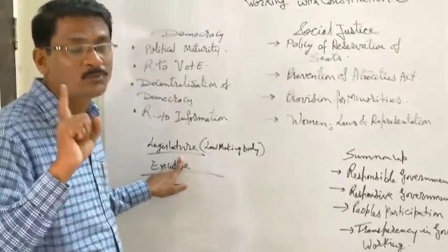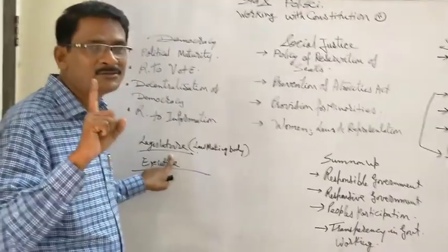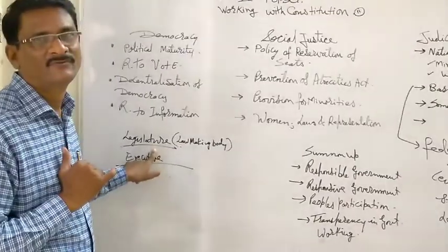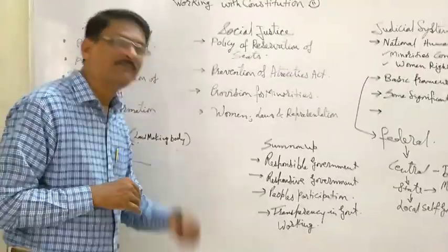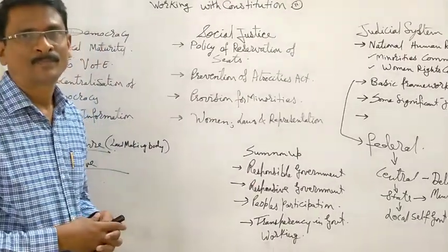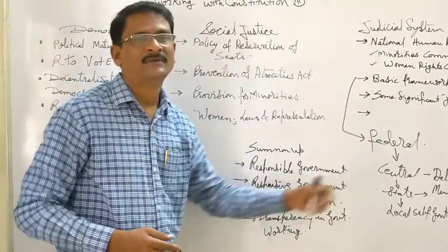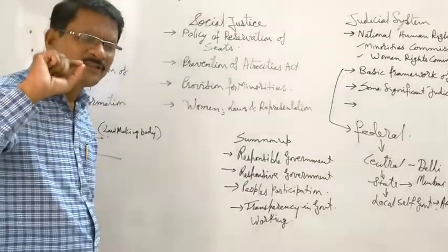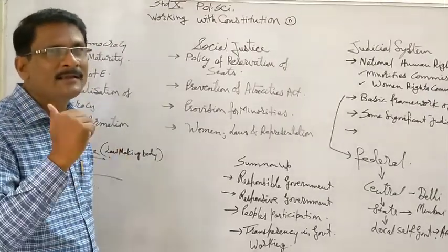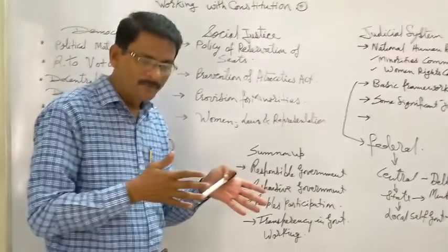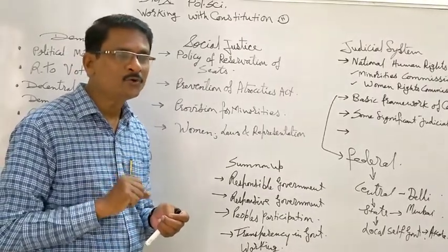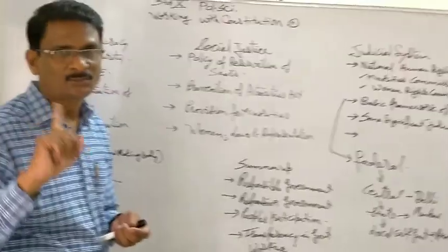The Indian government is responsible to the legislature, the state government is responsible to the Vidhan Sabha and Vidhan Parishad, and so is the local self-government. Then there is responsive government — the government must respond, and this response is directly related to the judicial system. With each and every individual, directly or indirectly, the government is responsible. That is also the other side of the people who participate in the daily working of the government, and the government must respond positively.